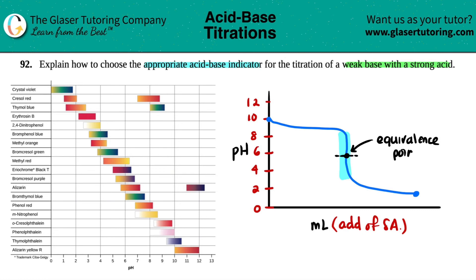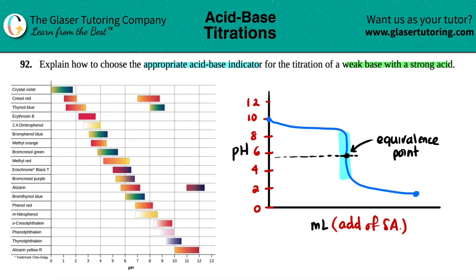The equivalence point is when the weak conjugate acid starts predominating over the base. For a weak base titrated with a strong acid, the equivalence point falls in the acidic range. So the indicator you choose should be roughly acidic — around a pH of five or so. That means you could use methyl red, or possibly methyl orange if the equivalence point is closer to pH four.